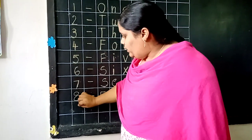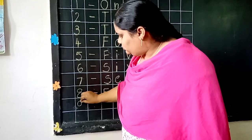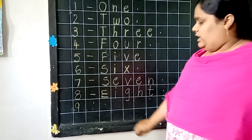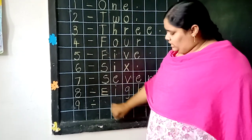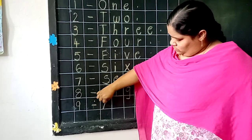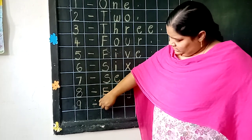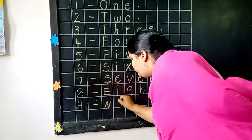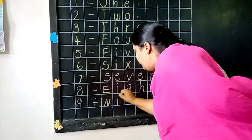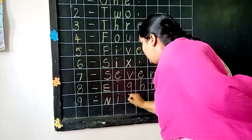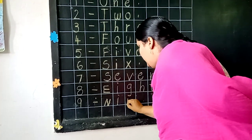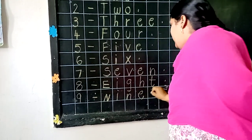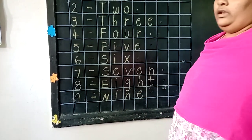Now, 9. What is this? 9. What is the spelling of 9? N, I, N, E. 9.